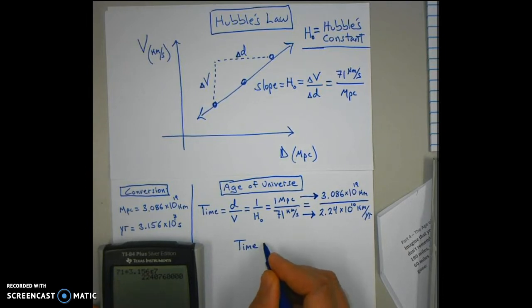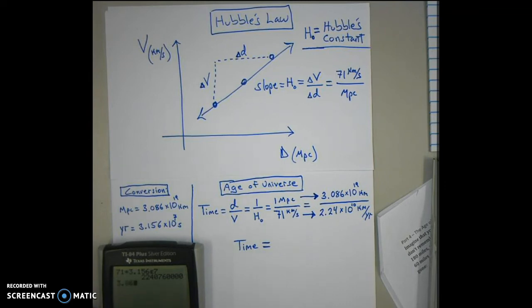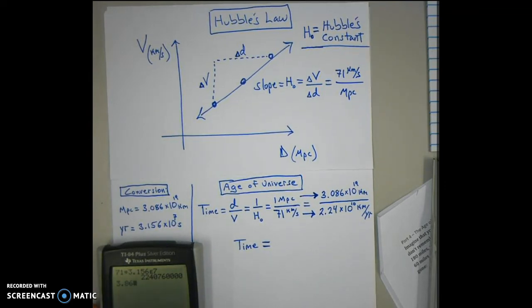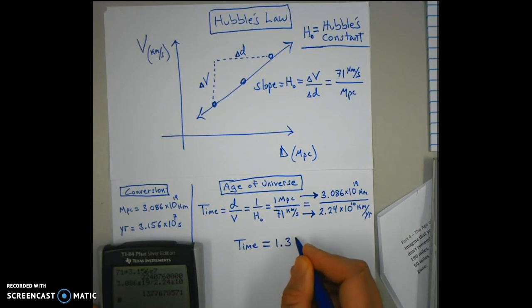When you divide a kilometer by a kilometer per year, you'll be left with years. So we have 3.086 times 10 to the 19th divided by 2.24 times 10 to the 10th, and you will get a number. This is about 1.377777...